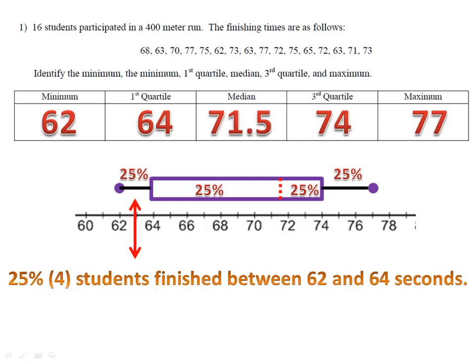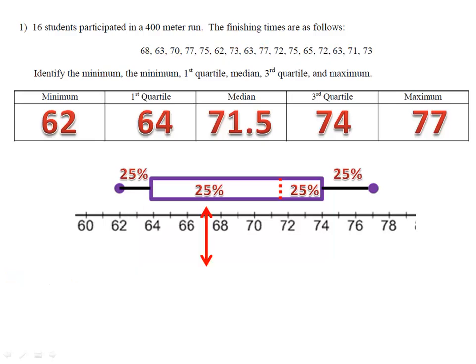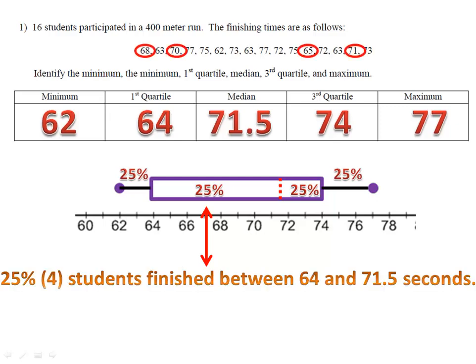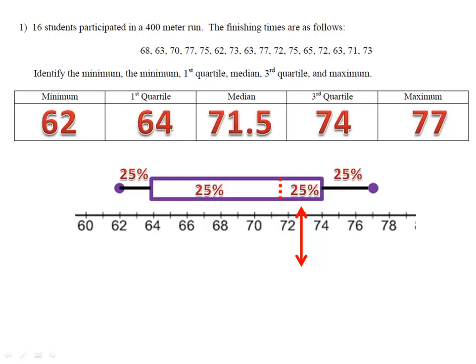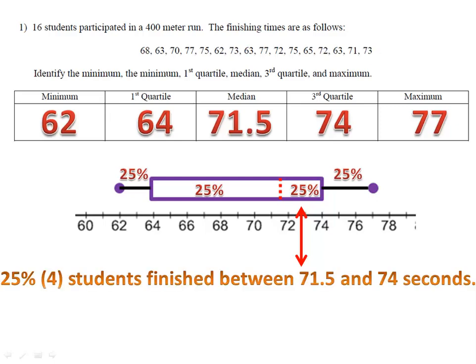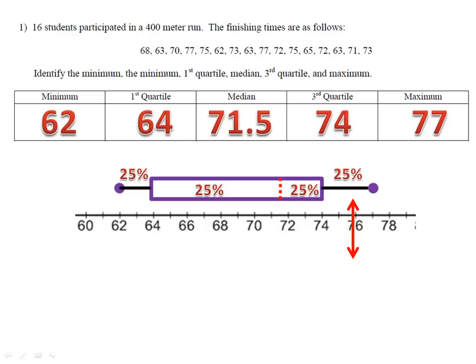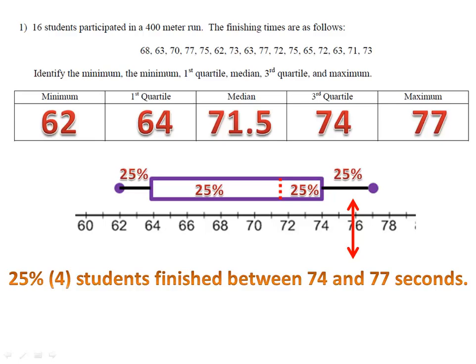In the first section, four students were between 62 and 64, and if you look at the list there are four scores in that range. In the second part, from 64 to 71.5, there are four students who fell into that time range — 25% of them. The same is true from 71.5 to 74: there are 25% of our scores, in this case four, that fall between those two numbers. Finally, in the upper section from 74 to 77, we have four students who finished in that range — again, that's 25%.